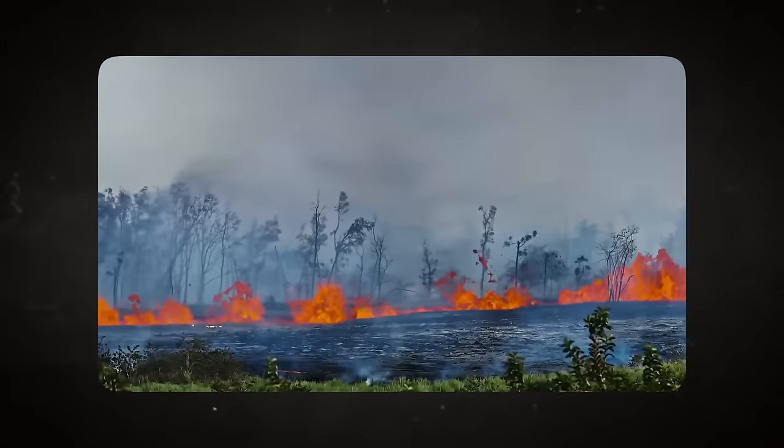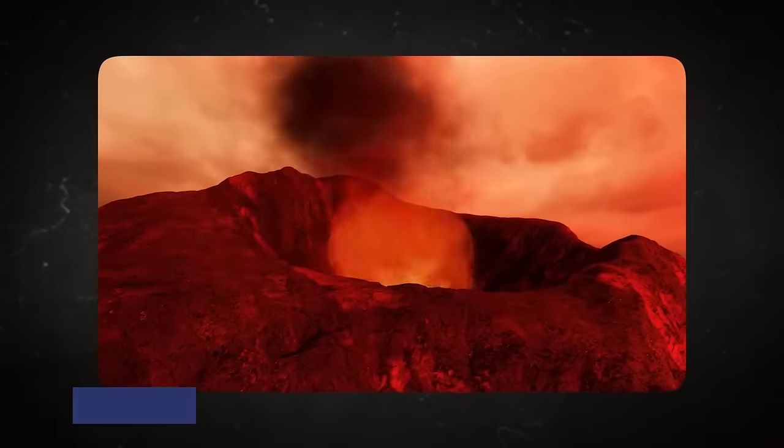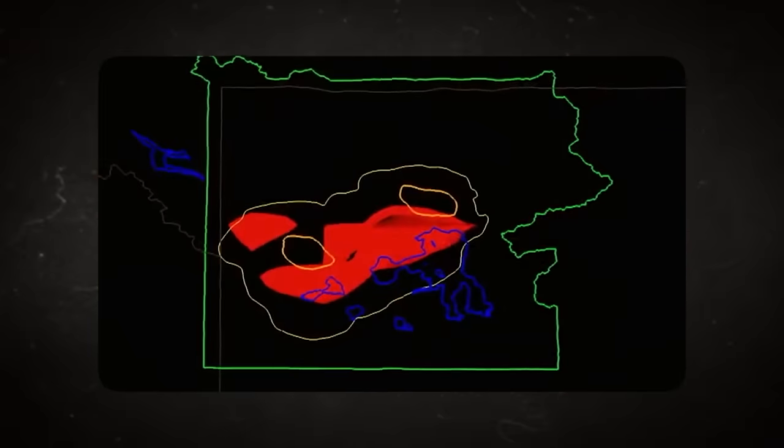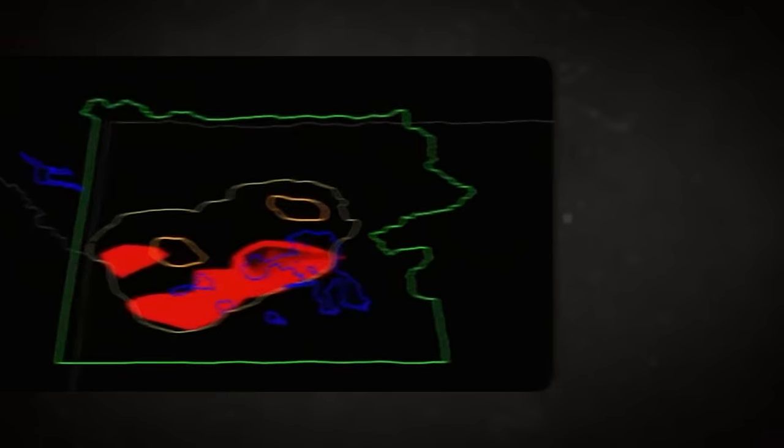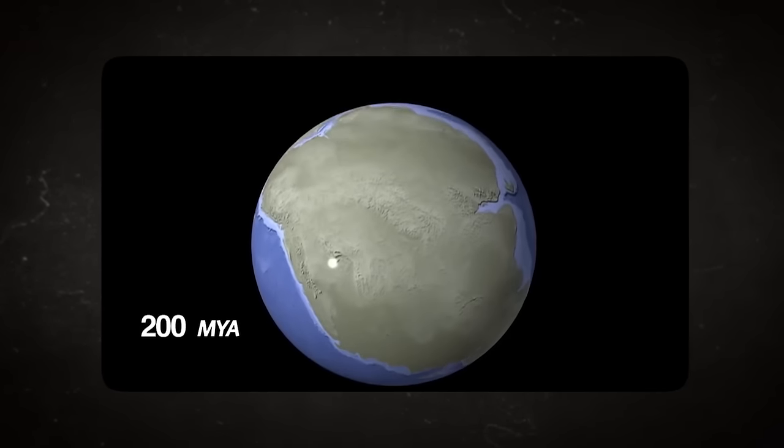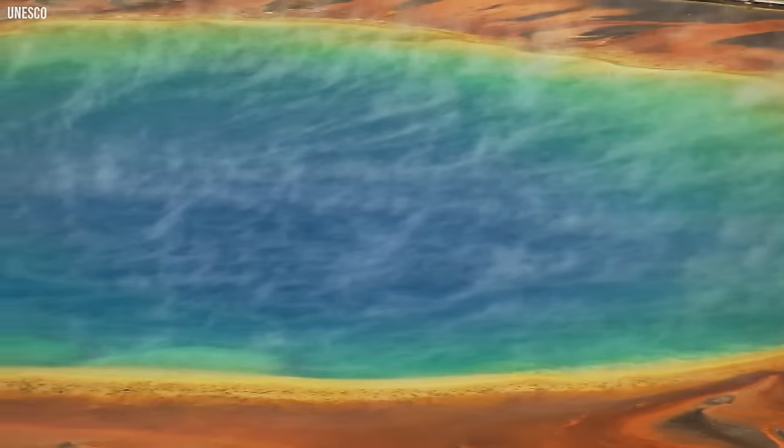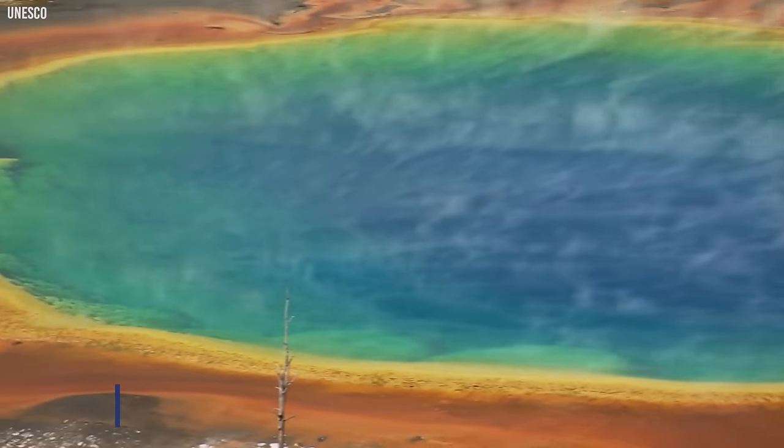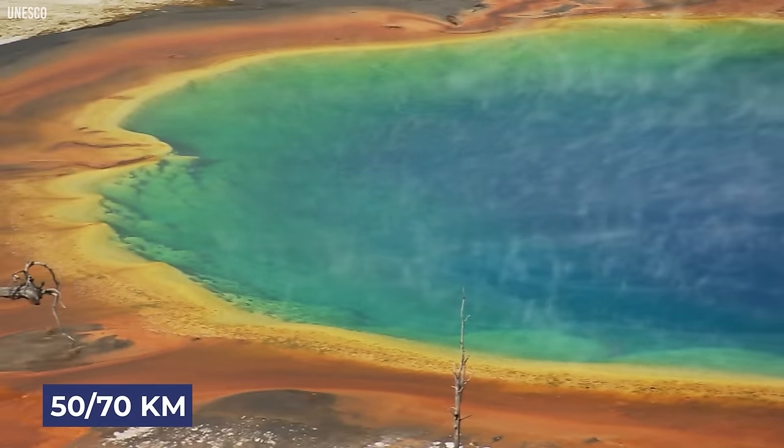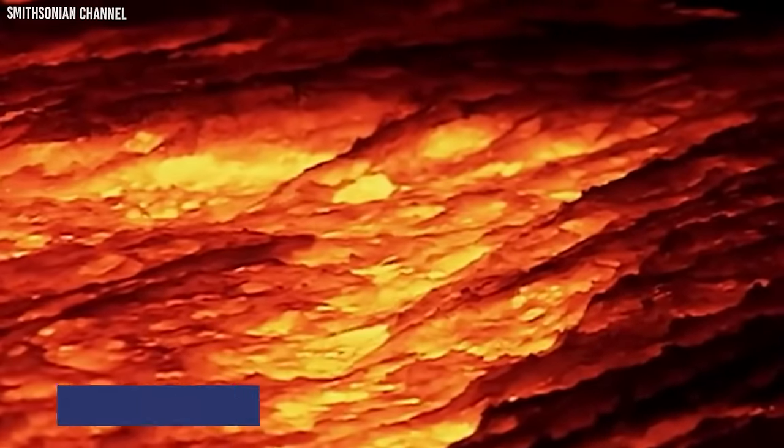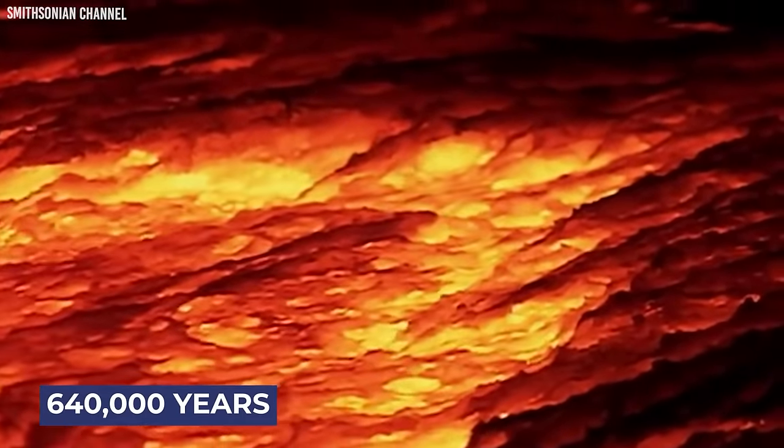This supervolcano was formed by a series of eruptions that took place around 2.1 million years ago. Yellowstone sits in a region that has a history of volcanic and seismic activity. The Yellowstone Caldera, roughly oval in shape and about 50 by 70 kilometers in size, resulted from the last eruption which occurred about 640,000 years ago.